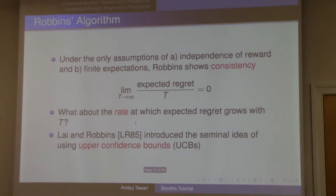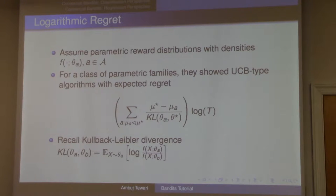So this idea, Lai-Robbins came up with this idea of using confidence bounds in these multi-armed bandit problems. They assume that, so remember, Robbins 1952 was very general. The only thing he's assuming about these reward distributions beyond independence is that they have a mean, which is pretty much the least you could assume because you need these means to be defined even to write down the regret.